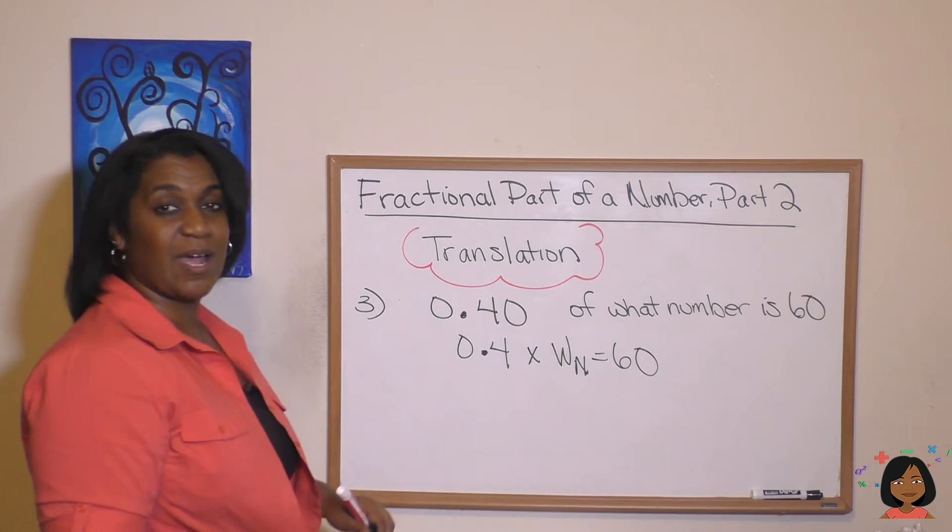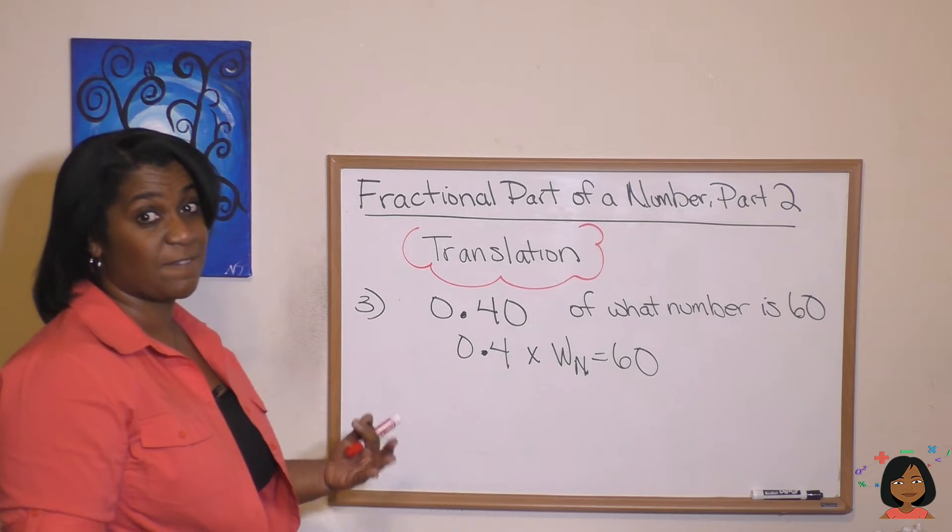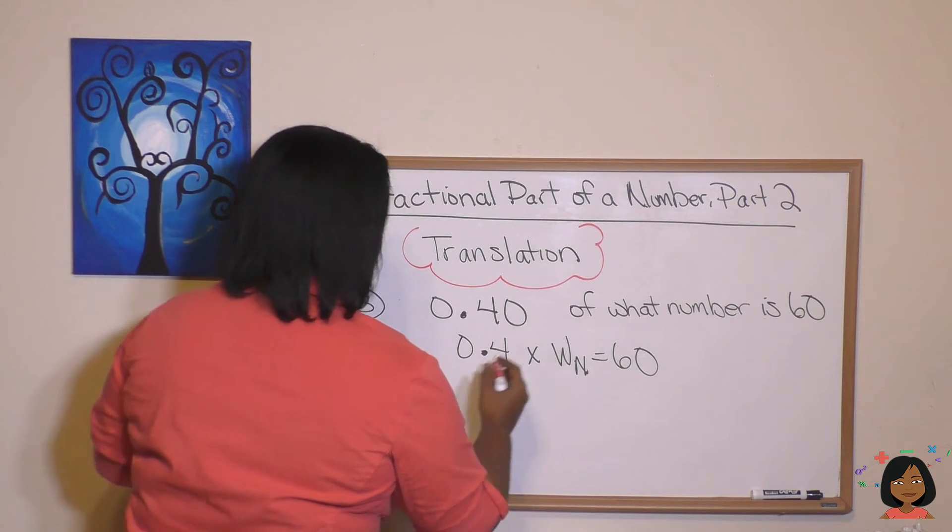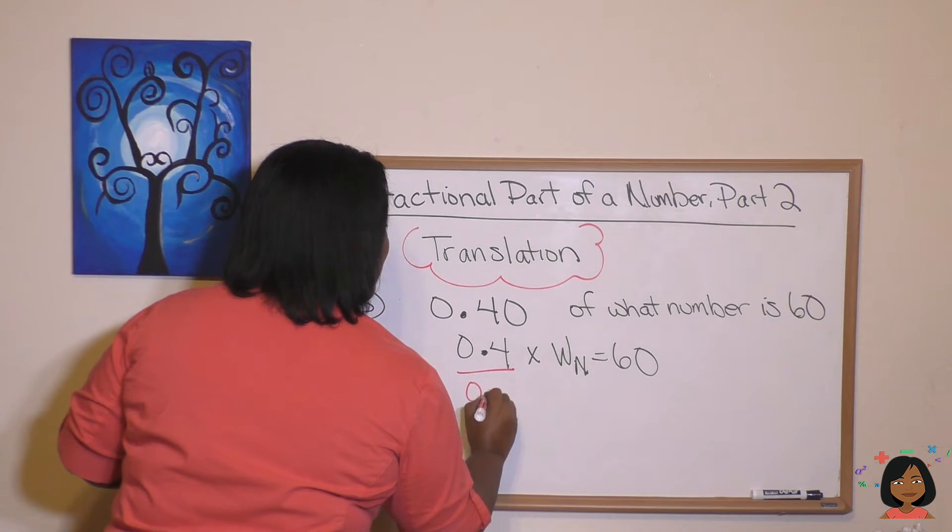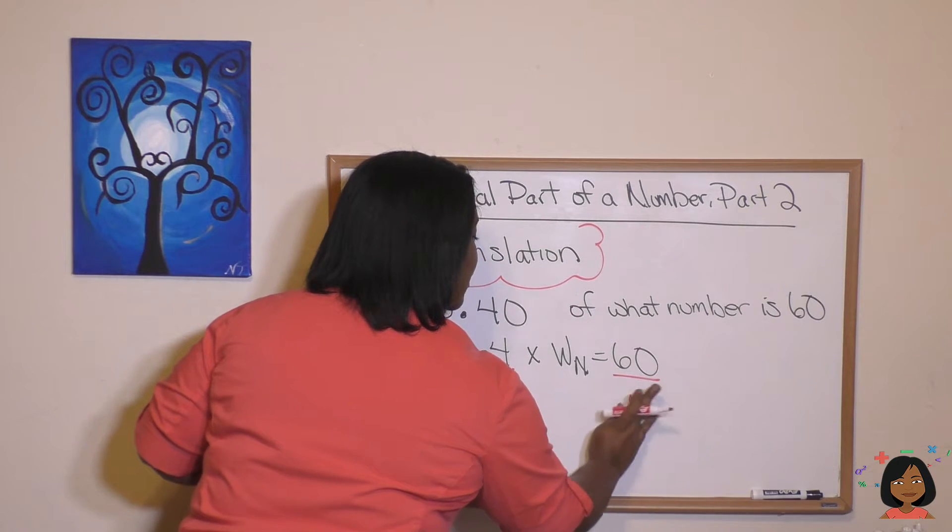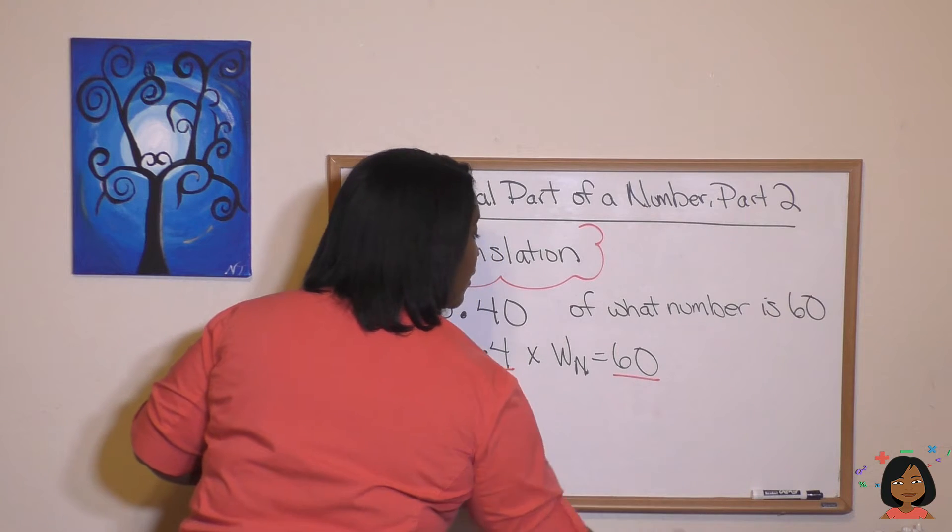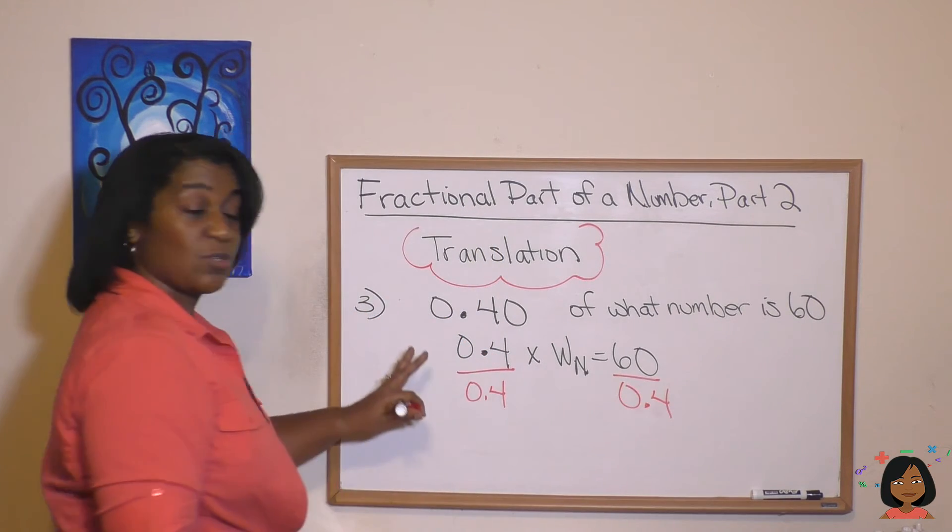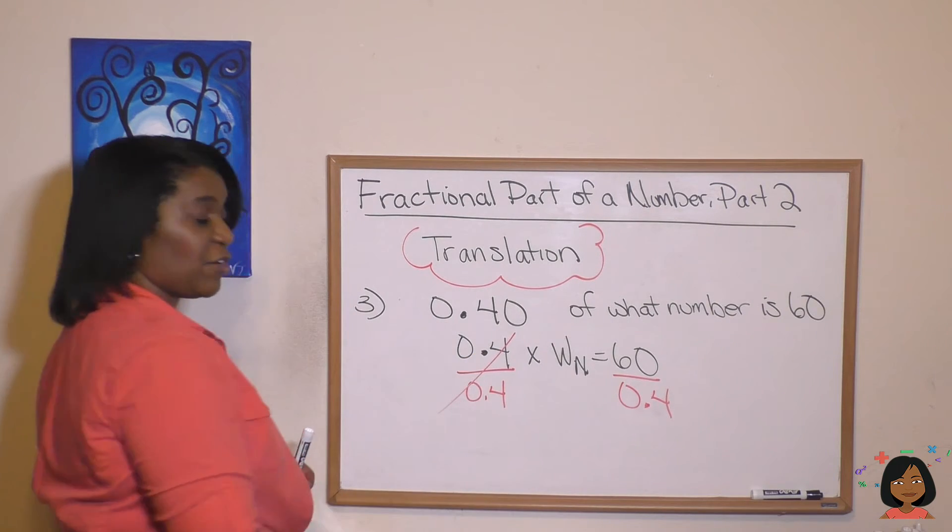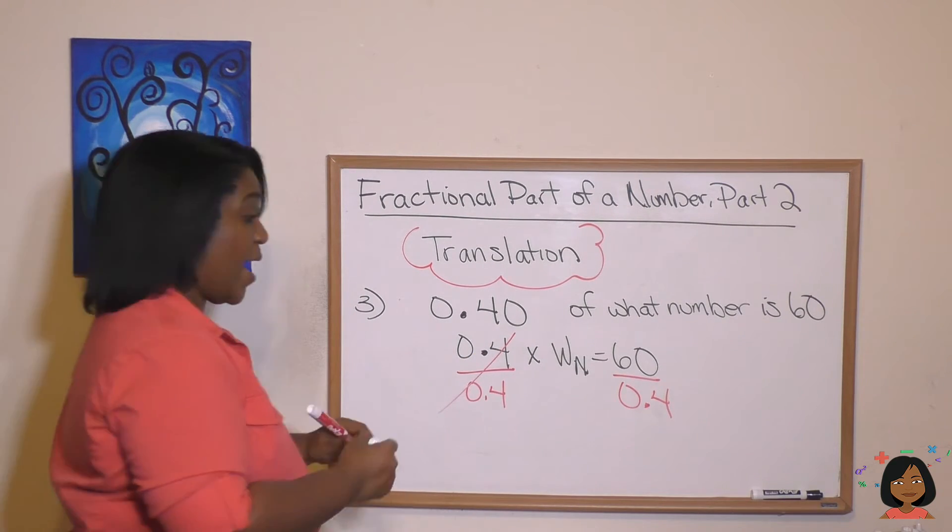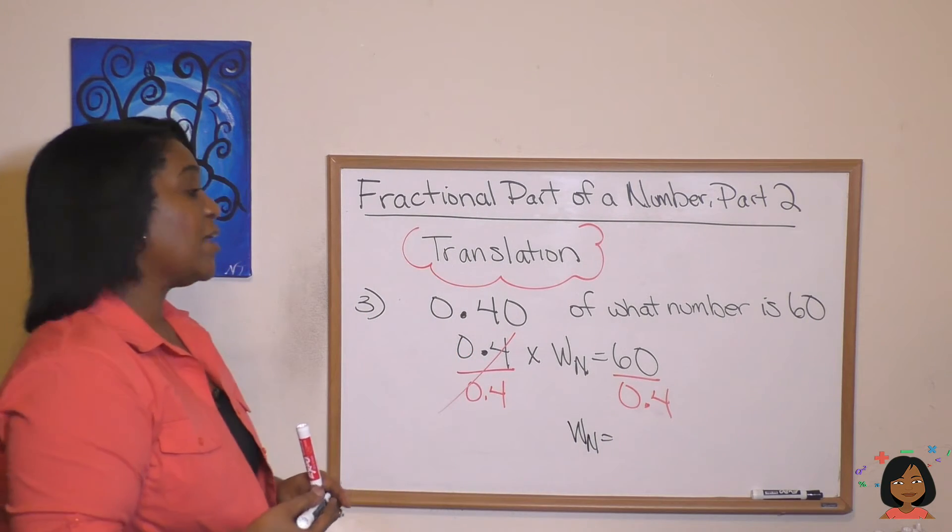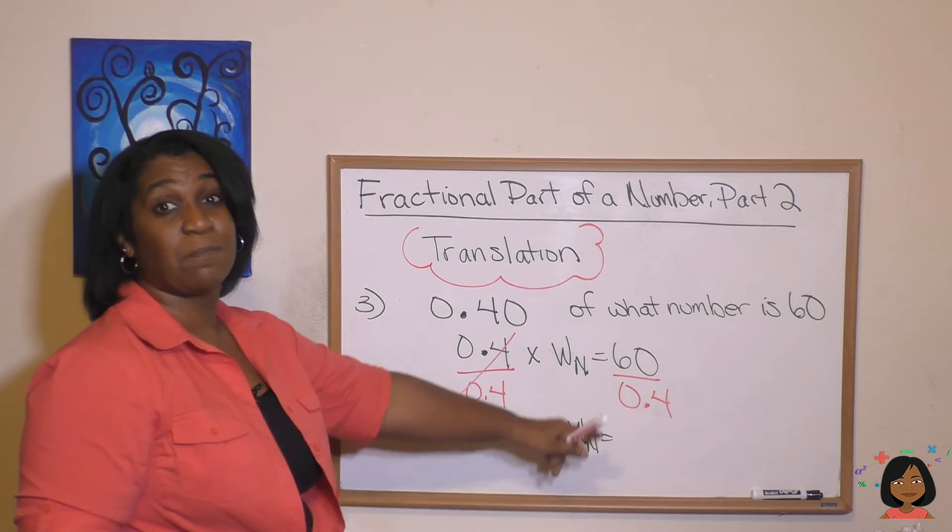Now, to find our what number, we have a missing number in multiplication, so we need to divide both sides by this 0.4. We're going to divide this side by 0.4 and this side by 0.4. So dividing both sides by 0.4. Well, what happens over here? This whole thing crosses out and I'm left with my WN, my what number. And here I have to do a division problem. I have 60 divided by 0.4, so I have a decimal as my divisor.